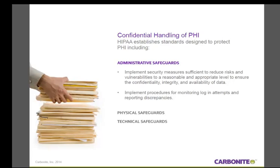Let me explain what we mean by administrative, physical, and technical safeguards. HIPAA has a schedule of these safeguards — I'm going to give you some examples of each. They're subject to interpretation, although now that many companies are documenting their compliance, best practices are emerging. For example, one administrative safeguard is that a company — whether a covered entity or a business associate — needs to implement security measures sufficient to reduce risks and vulnerabilities to a reasonable and appropriate level to ensure the confidentiality, integrity, and availability of data.